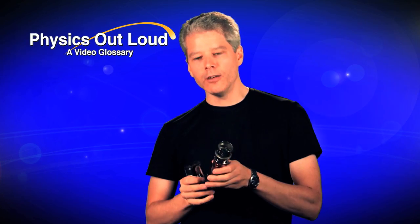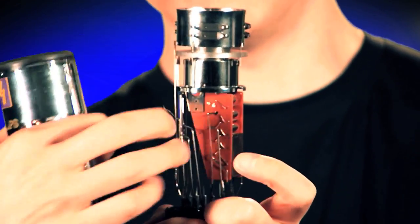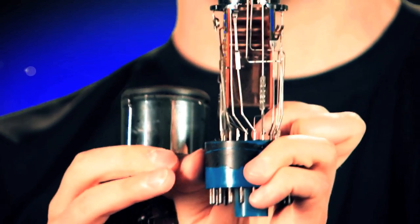That one electron will then cascade down something called a dyno chain, but the bottom line is it behaves just like an avalanche.